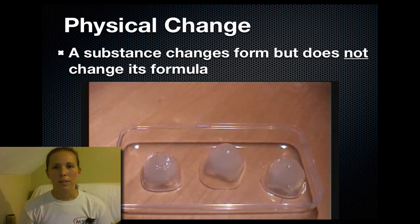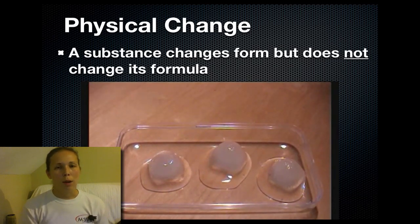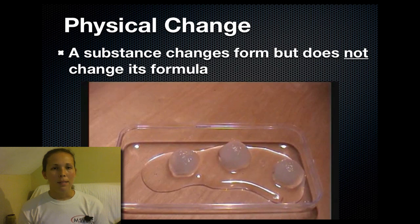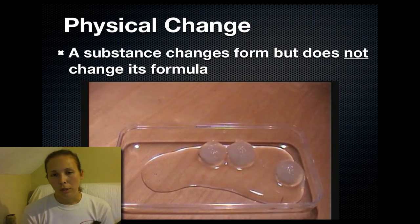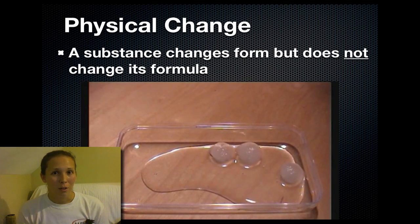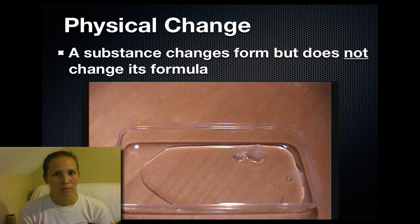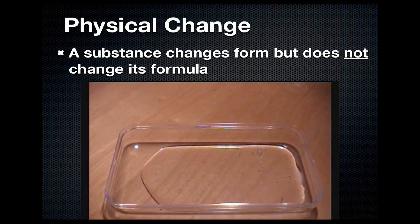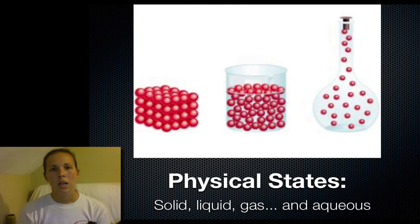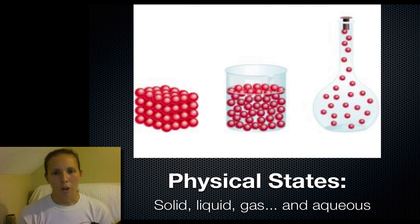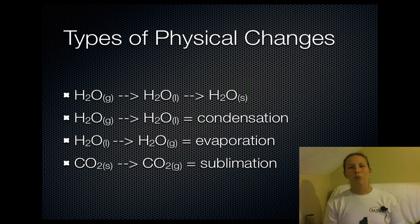To start out I want to talk about physical change. We looked a little bit at physical properties in the previous video, but when something changes physically it's changing form but it does not change its formula. The video below is showing you ice melting — ice is just water in its solid form. When water is in its liquid form it's still H2O. Matter has several different physical states: solid, liquid, gas, and in chemistry we also want to think about aqueous solutions, which are something dissolved into something else.